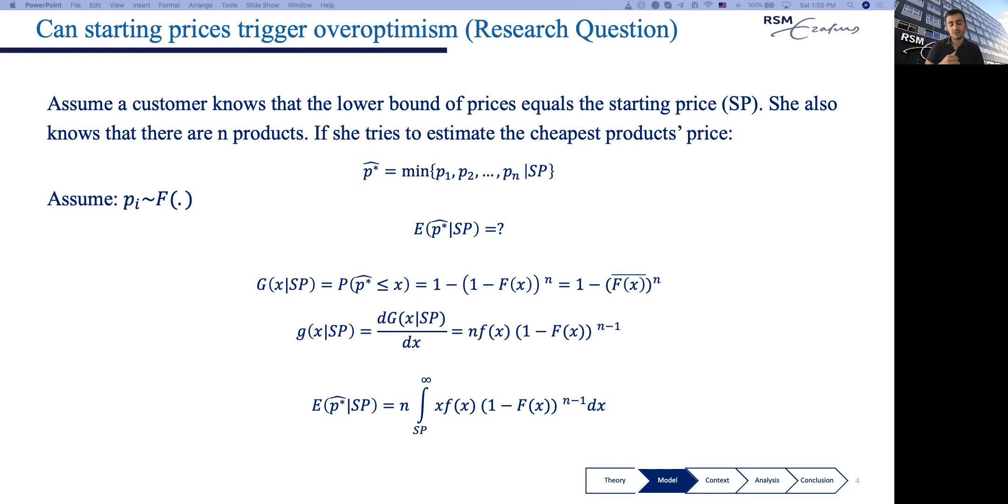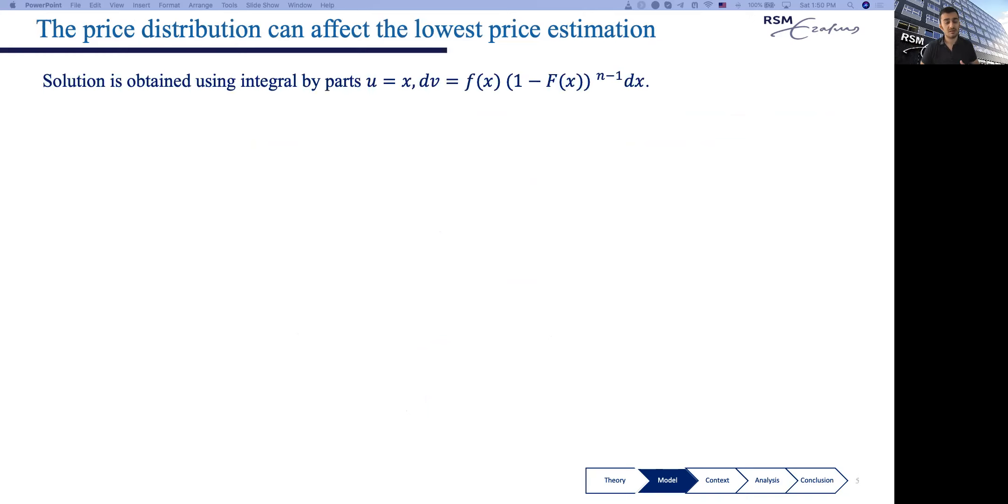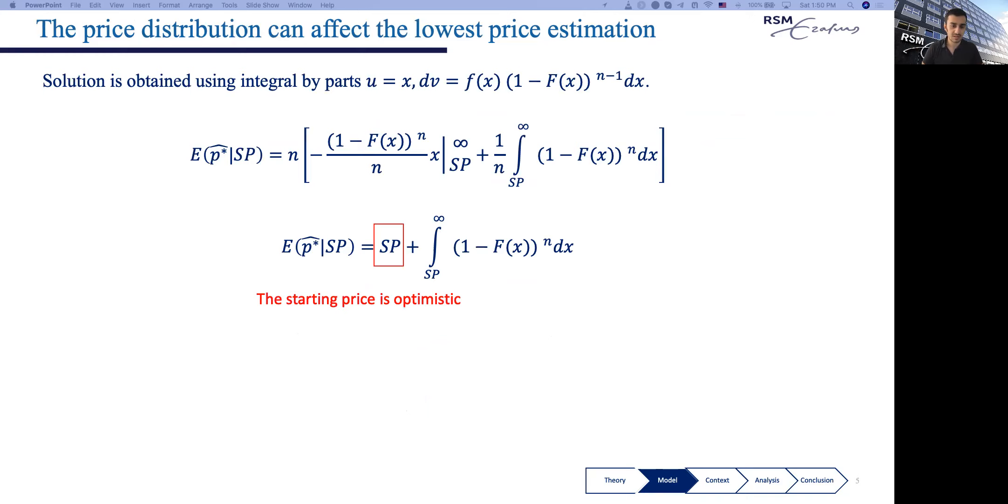So what I do here is calculate the expected value of this estimator. Feel free to stop the video. I'm estimating this expected value by first calculating the cumulative distribution function and then integrating over all values. Using Bayesian statistics and integration by parts, I reach the following expected value: the expected value of the lowest price depends on the starting price, which is no new information. The customer always expects to pay more than the starting price. So the starting price is already optimistic, but it also has a positive term which depends on the price distribution. We call this term overoptimism.